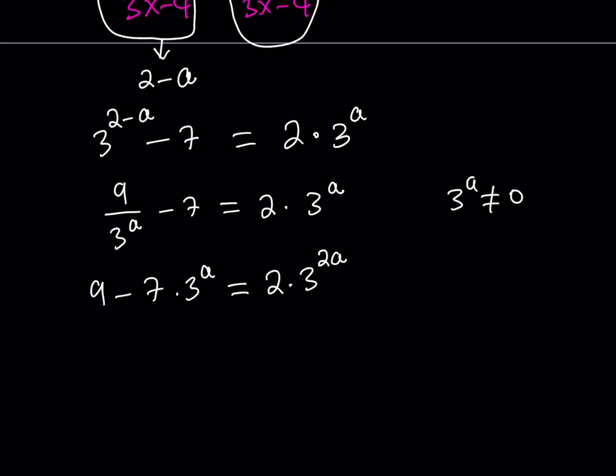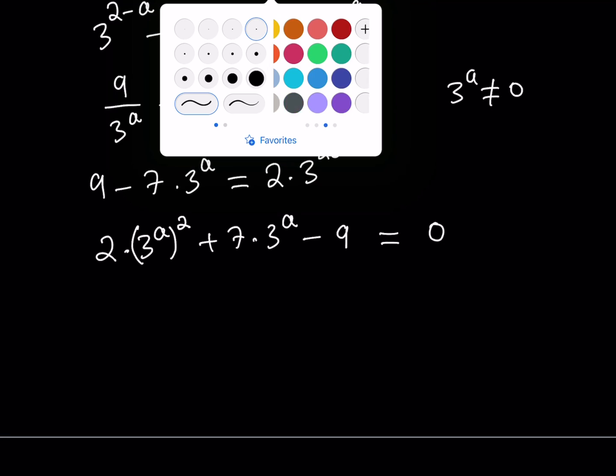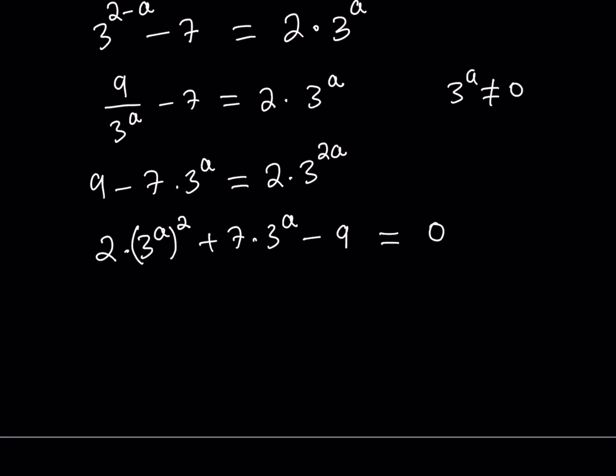Nice. Now, what does this mean? This means that you have the following, 2 times 3 to the power of a, and I can write it as 3 to the power of a squared, can't I? Add the 7 times 3 to the power of a, and then I have to subtract the 9 because I'm getting everything on the right-hand side, correct? Okay. And this should all equal 0. Nice. Now, what does this look like?